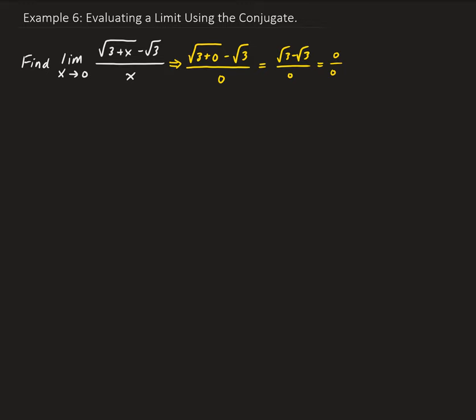So this is another example of a function that's going to have a hole in it. From here, we need to rewrite the function, and in this case, we can use the conjugate. So we have the square root of 3 plus x minus square root 3, all divided by x, and we're going to multiply this by using the conjugate.